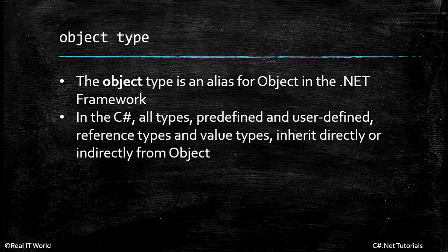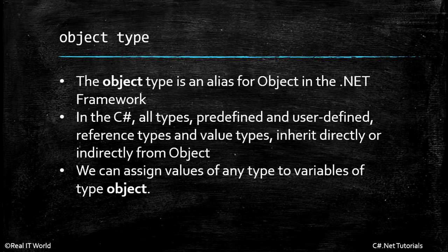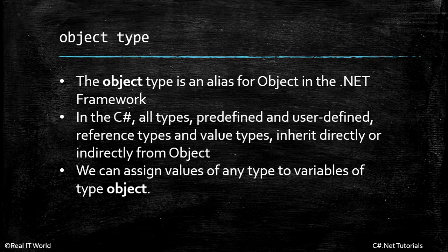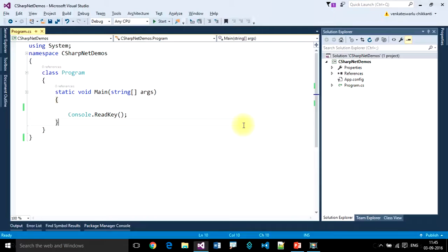This is important information. What is the parent type or parent class in C Sharp .Net? We can say object. We can assign values of any type to variables of type object. If you create a variable of type object, you can store any type of data in that variable. So let's look at an example.